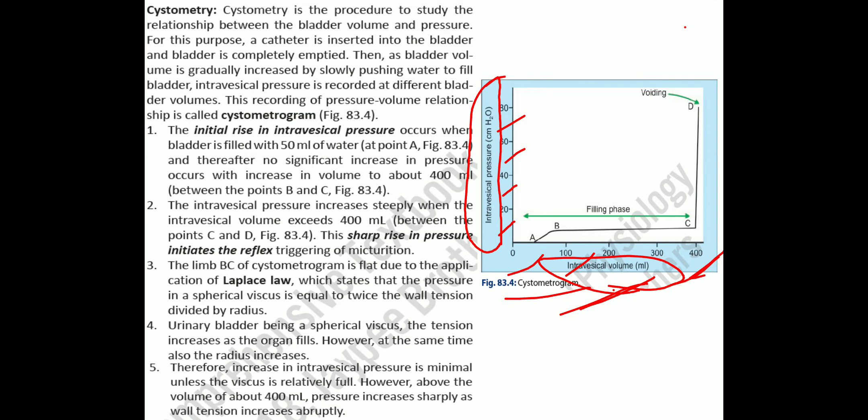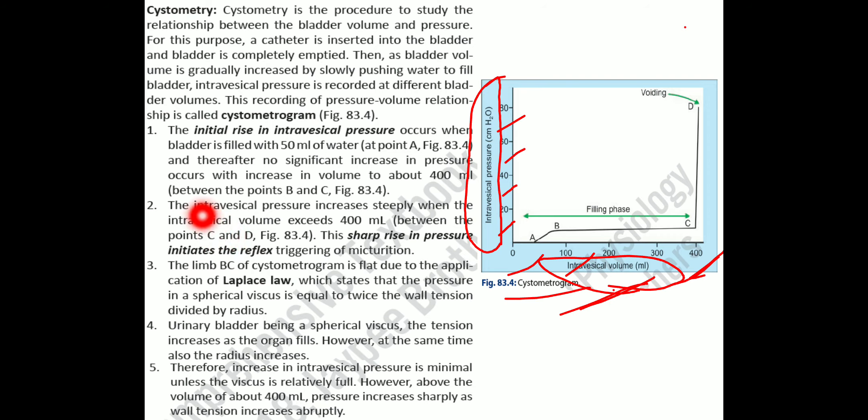There is an initial rise in intravesical pressure when the bladder is filled with 50 ml of water. From point B to C — the filling phase — the volume increases from 100 to 400 ml while pressure remains essentially constant due to the property of plasticity.